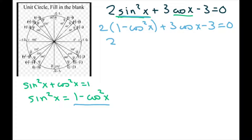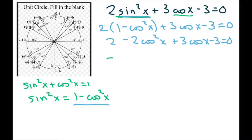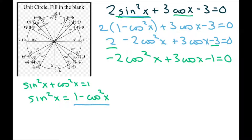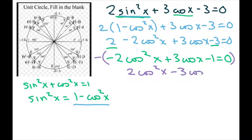Distribute and then simplify. This gives negative 2 cosine squared of x plus 3 cosine of x, and negative 3 plus 2 is negative 1, equals zero. I don't like to factor with the negative, so I'm going to negate the whole equation, giving: 2 cosine squared of x minus 3 cosine of x plus 1 equals zero.